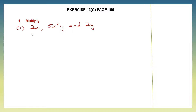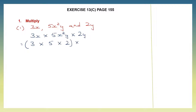Here we have to multiply 3x into 5x squared y into 2y. In algebra when we multiply, first we multiply only the numerical coefficients, that is the numbers. So let's take all the numbers: 3 into 5 into 2. Now let's take all the literal coefficients, all our letters: x into x squared, y into y.